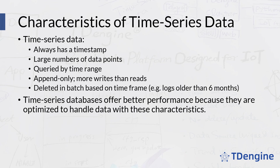Time series data is usually queried over a specific time period, such as: show me the average temperature over the past 60 seconds, or show me all logs generated in the past hour. For that reason, time series databases need to be efficient at querying time ranges.